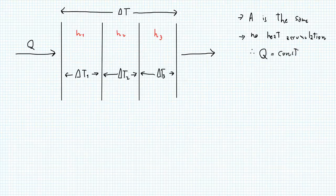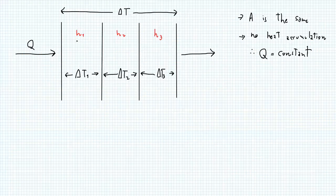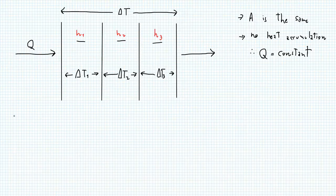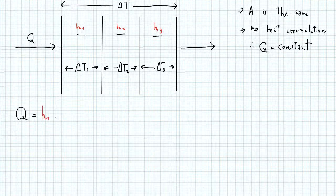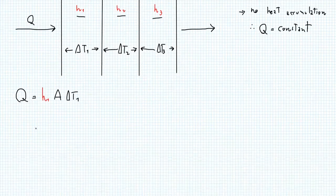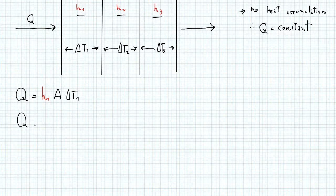So the amount of heat per unit time meeting the first wall is equal to the heat per unit time leaving the last wall. So each medium has a different heat transfer coefficient, which means we can write three different equations where Q and A are the same. So Q equals H1 times A times delta T1. And we can also write that Q equals H2 times A times delta T2. And then similarly, Q equals H3 times A times delta T3.